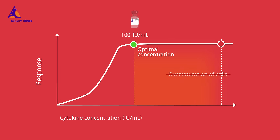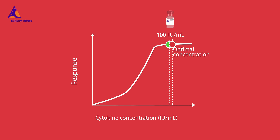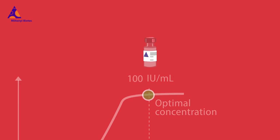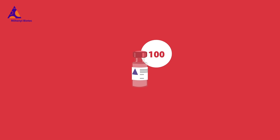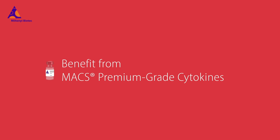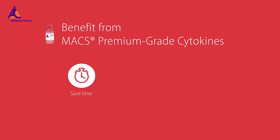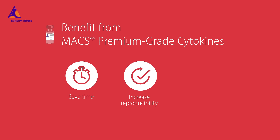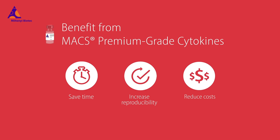Plus, you don't need to over-saturate your experiment anymore. This also means you can use up to ten times less reagent. Choose lot-specific cytokine activity with max premium grade cytokines to save time, increase reproducibility, and reduce costs.